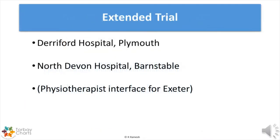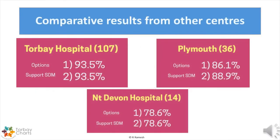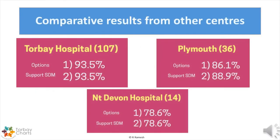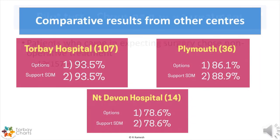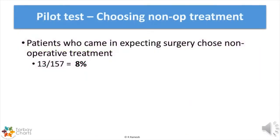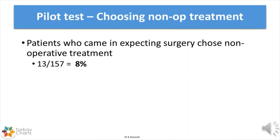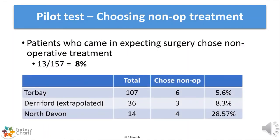Following pilot testing in Torbay Hospital and after approval from the Devon STP, the Torbay Chart was also trialed in other regional trusts in Devon. Results from the other two centers were very similar to our pilot test. About 8% of patients changed their mind and chose non-operative treatment, having come to the clinic expecting surgery. The breakdown from all hospitals is given in the table.